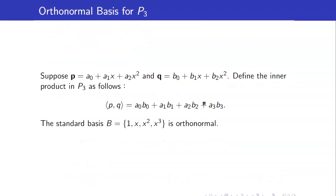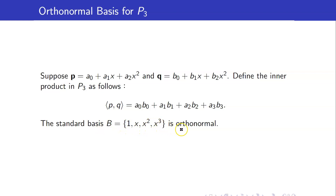Let us discuss another example. Suppose that P and Q are polynomials in P3, and we define their inner product by multiplying corresponding coefficients — the constant terms, the coefficients of X, the coefficients of X squared — and adding them all up. The standard basis {1, X, X², X³} is orthonormal with respect to this inner product. Remember that you need to know what inner product is defined on the space to determine whether a set is orthonormal or orthogonal.